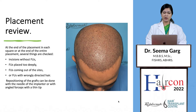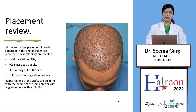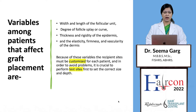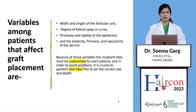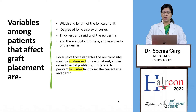At the end of placement in each section or at the end of entire placement, several things must be checked: incisions without follicular units, follicular units placed too deeply or coming out of the sides, or grafts with wrongly directed hair. Repositioning can be done with the needle of the implanter or with angled forceps with a thin tip. Variables among patients affecting graft placement include width and length of the follicular unit, degree of follicle splay or curve, thickness and rigidity of the epidermis, and the elasticity, firmness, and vascularity of the dermis. Because of these variables, recipient sites must be customized for each patient, and it is crucial to perform test sites first to set the correct size and depth.